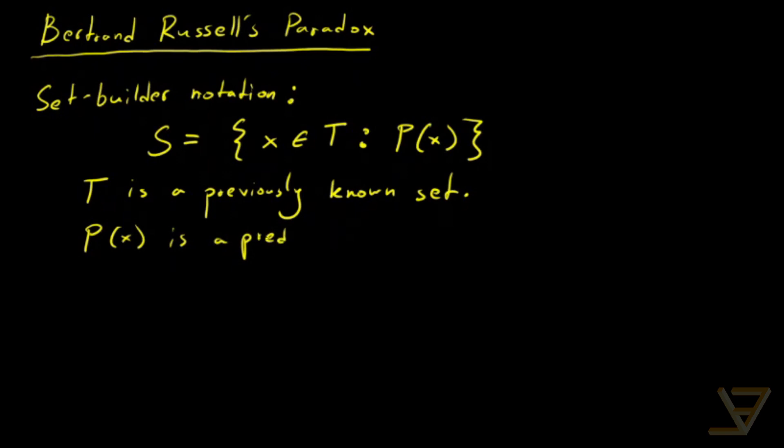Some sort of a condition. And what we're doing is that we have this set T and we're carving out some part of it that we call S. And S is all the elements of T that satisfy the predicate.